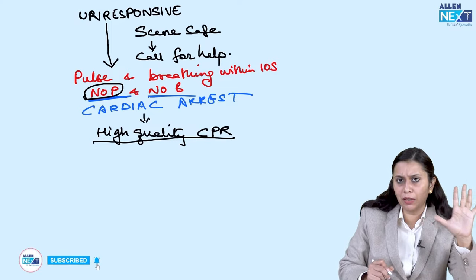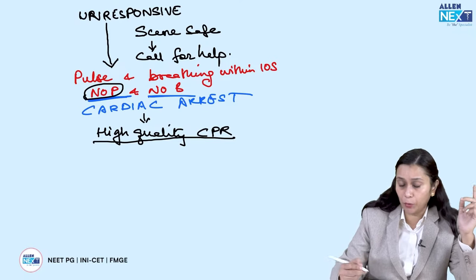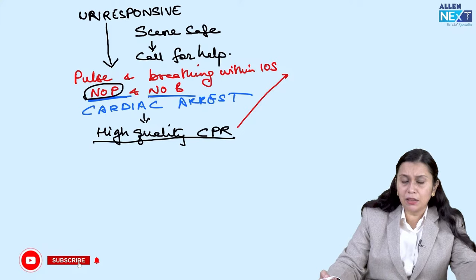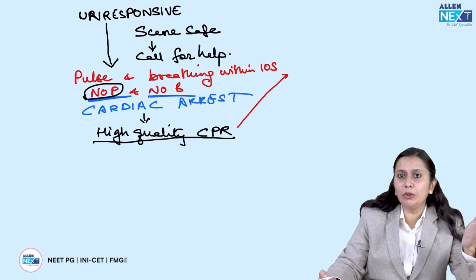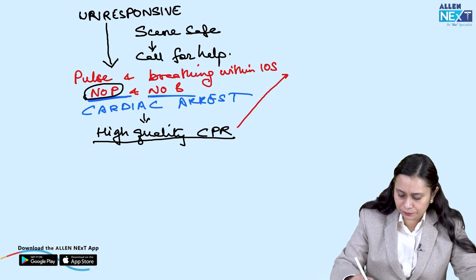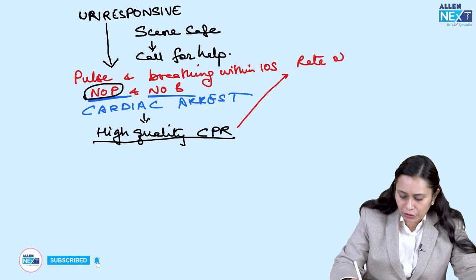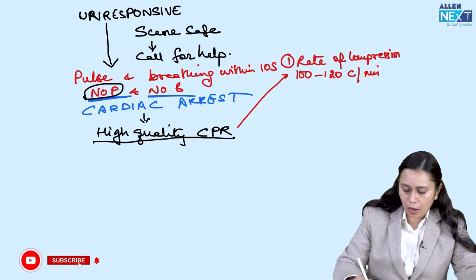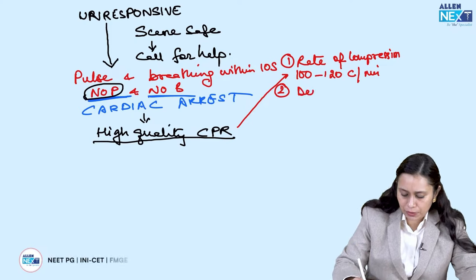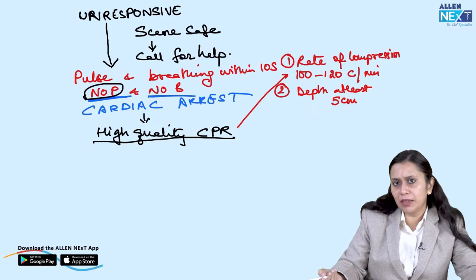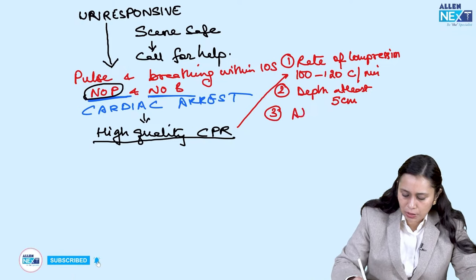There are five important points for high quality chest compression. First: the rate of compression should be 100 to 120 compressions per minute — sufficient to maintain perfusion. Second: depth should be at least 5 cm, not more than 6 cm. Third: allow complete chest recoil. When you press, the brain gets blood; when you allow complete recoil, the heart gets refilled and adequately perfused. Both are equally important — brain during compression, heart during recoil.